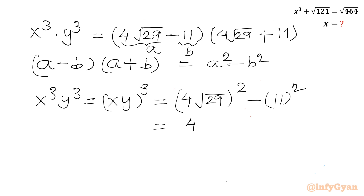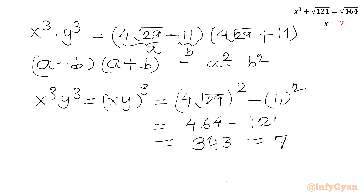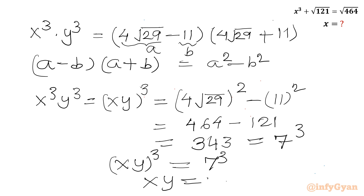This gives us 464 − 121, and the difference is 343, which is the cube of 7. So on the left-hand side we have (xy)³ and on the right-hand side we have 7³. After taking the cube root of both sides, we get xy = 7. Let us call this equation number 2.